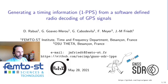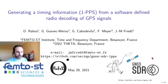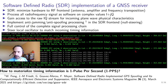This presentation will focus on generating timing information of a 1 pulse per second (1 PPS) signal from a software-defined radio decoding of a global navigation satellite system (GNSS) receiver, and most significantly the GNSS-SDR free open source framework. The outline of the presentation is as follows.